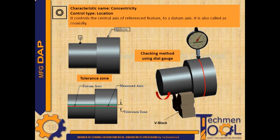...be measured with respect to datum A using a dial gauge by moving its plunger on the surface of the feature in a circular direction by rotating the respective portion of the feature, which is located on the V-block. As shown in the picture, the deflection of the dial gives the actual concentricity value with respect to A. That value should be within the tolerance zone.